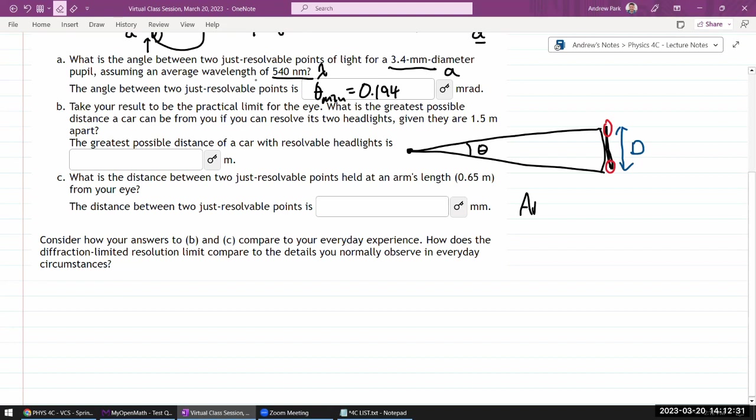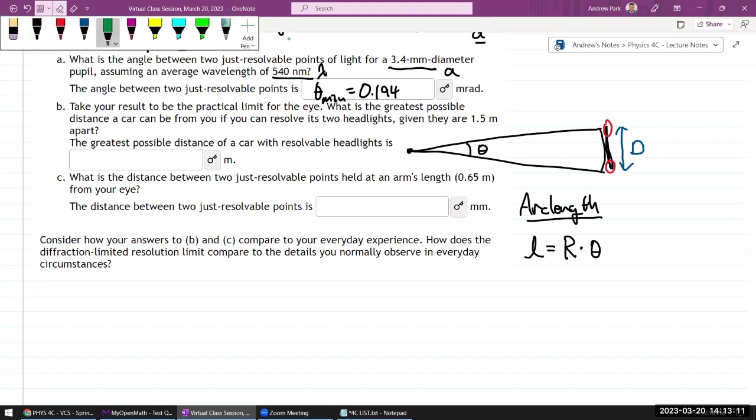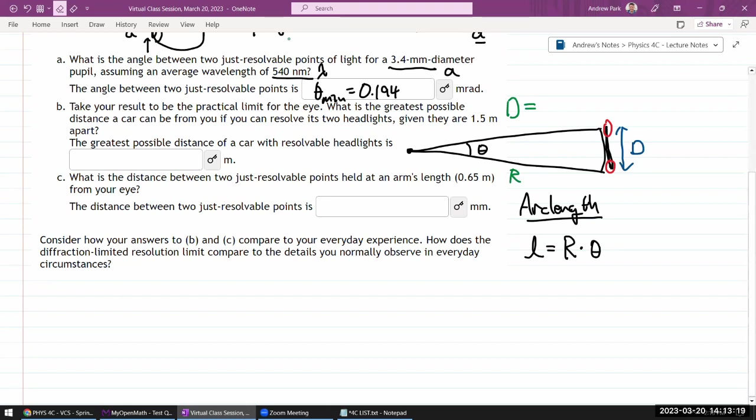And once you realize that, then arc length L is the radius of a circle times the angle from the center. This is where the definition of radian comes from. A lot of the degree units are arbitrary units. There's no good reason a full circle should be 360 degrees, but there is a very good reason why full circle in radians should be 2π. So with that, the expression that you would have here is that your arc length D is given by, if it's a circle of radius R which would be the distance from you to the car, it will be R times theta_min.